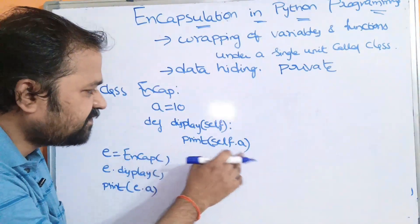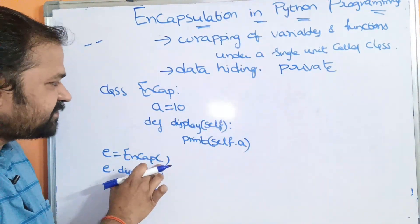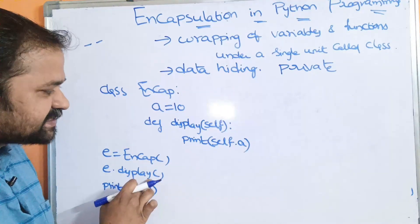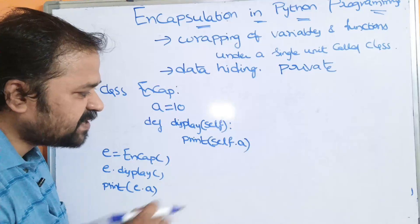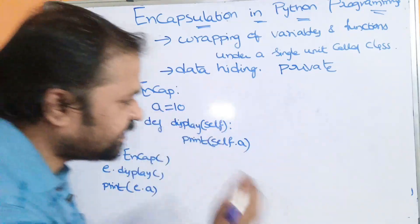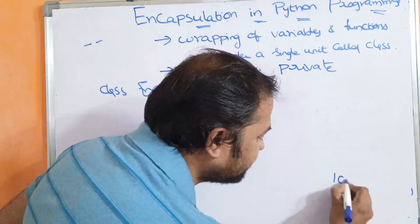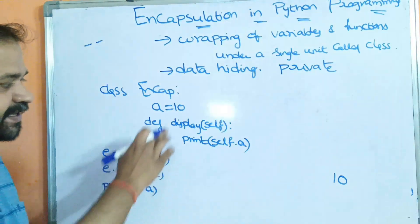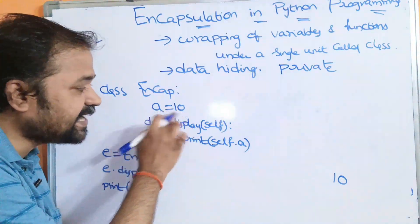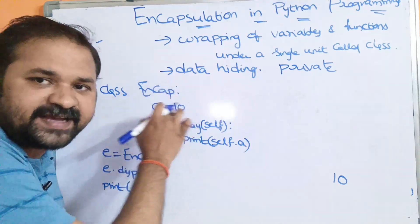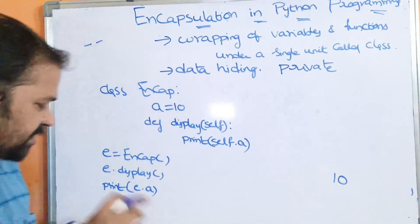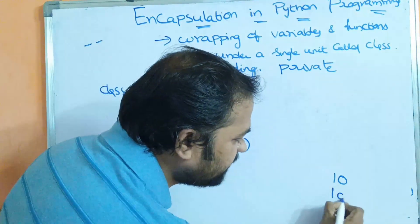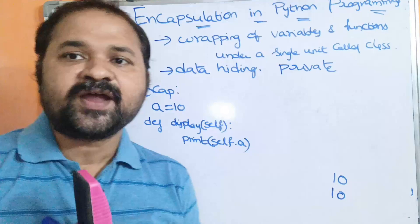So, print of self.a. Here, an object is created for the class — e.display. Whenever this statement is executed, control goes to the display method. Print of self.a — what is a value? 10. So, 10 will be printed. And after that, print of e.a. Here, a is the public member. We can access this member from anywhere in the program. So, 10 will be printed twice.